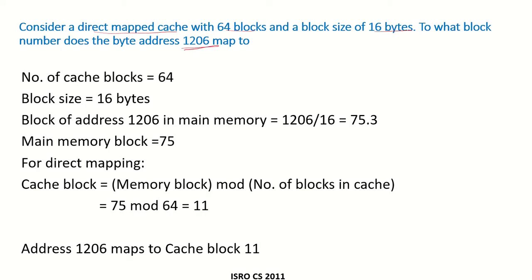We know that the number of cache blocks are 64 and the block size is 16 bytes. When we have to find which main memory address maps to which cache block, first we have to find which main memory block this address maps to.